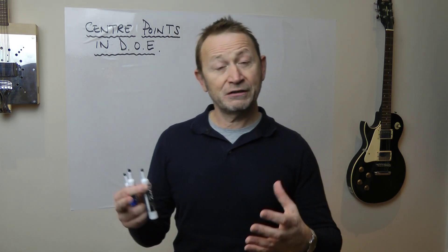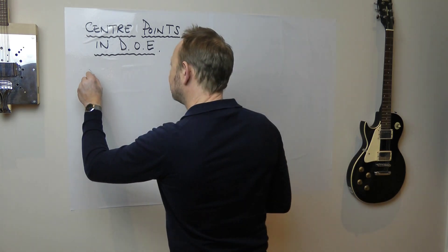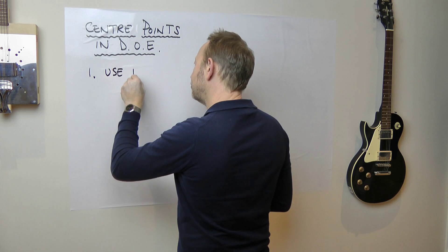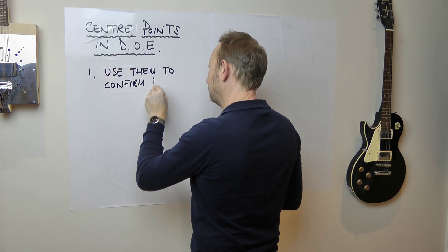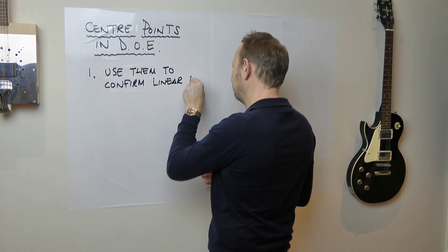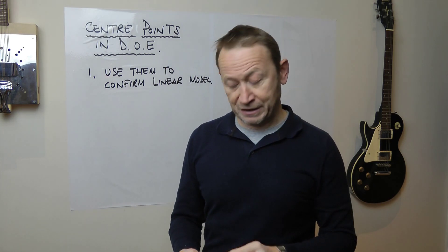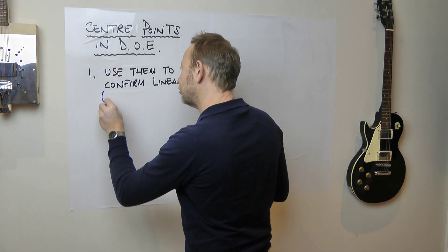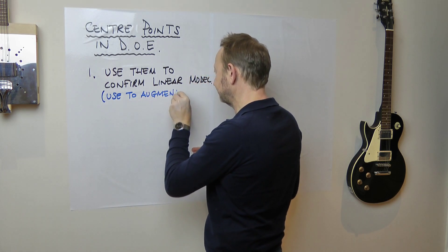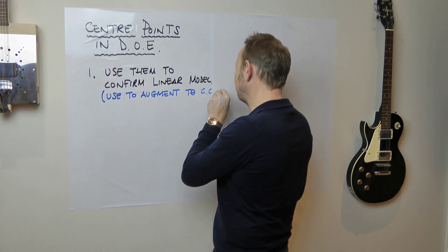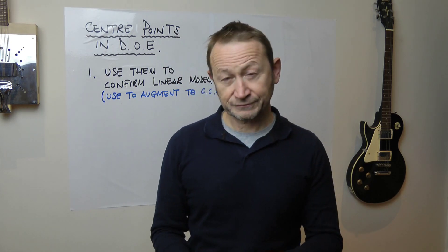So let's get into the three ways you can put centre points in a DOE. The first one is that you use them to confirm your linear model. This is the way I typically do it, and if the linear model doesn't confirm, I use them to augment to the central composite face design. That's use number one.